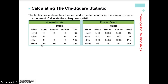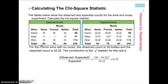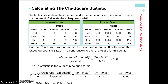We calculate our chi-square contribution for each cell: observed minus expected, square the difference, divide by expected, then sum all of those together to get a grand total chi-square of 18.28 in this case. We'll be interested in the individual contributions each cell — the combination of wine and music — made to the overall total.